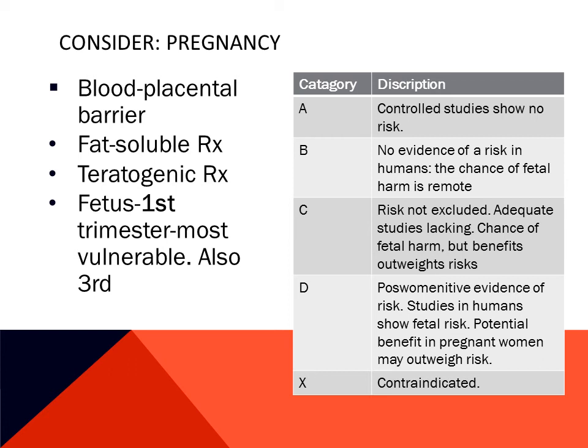The categories are A, B, C, D, and X. Category A shows that adequate and well-controlled studies show no risk to the fetus. At the other end, category X shows that studies in animals and humans have demonstrated fetal abnormalities — these medications should not be given. Pregnancy category ratings are given with each medication in your nursing drug books.